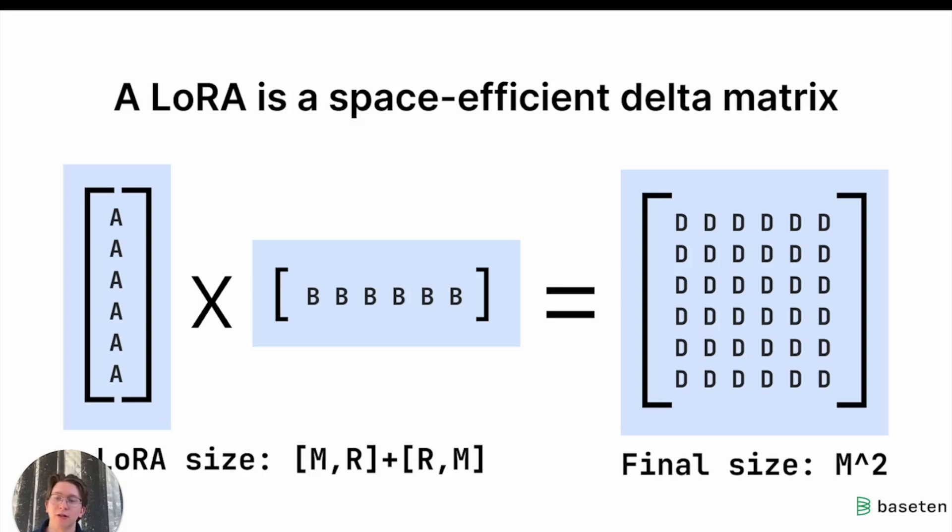So this means not only are we fine-tuning hundreds of times fewer parameters, which makes the fine-tuning process faster, we're also storing and loading hundreds of times fewer parameters. LoRa's can actually be as small as, for Llama 3, your standard size LoRa is just going to be 16 megabytes, compared to in FP16, we're looking at like 16 gigabytes for the model itself. So it's like 1000 times smaller.